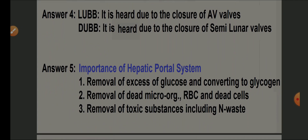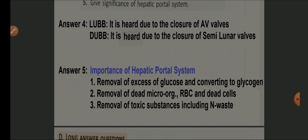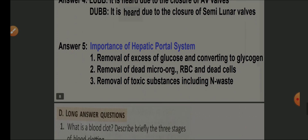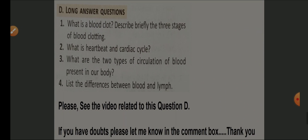State the importance of the hepatic portal system: number one, excess glucose is removed and converted to glycogen; it helps in the removal of dead microorganisms, RBCs, and dead cells; and it helps in the removal of toxic substances including nitrogenous waste — all taking place in the liver.